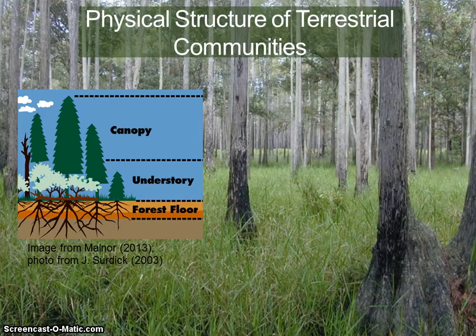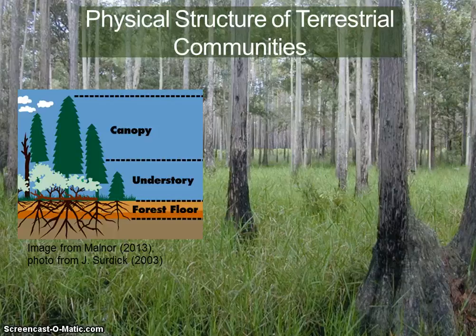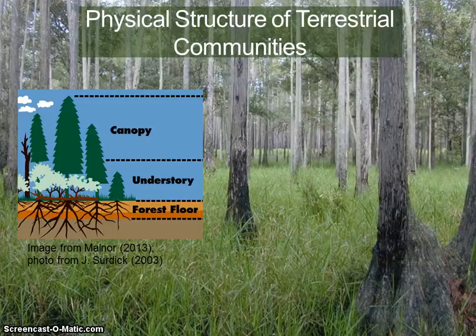Communities have a characteristic physical structure, and that physical structure reflects abiotic and biotic factors. The form and structure of terrestrial communities are defined primarily by vegetation. Ecologists often classify and name terrestrial communities based on the dominant growth form — for example, herbaceous or woody — and their physical structure. Every community has an associated vertical structure. Terrestrial vertical structure is determined by the growth form of plants, which controls the vertical gradient of light. For example, a well-developed forest has multiple layers of vegetation.